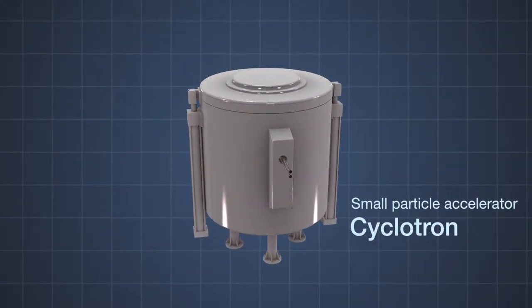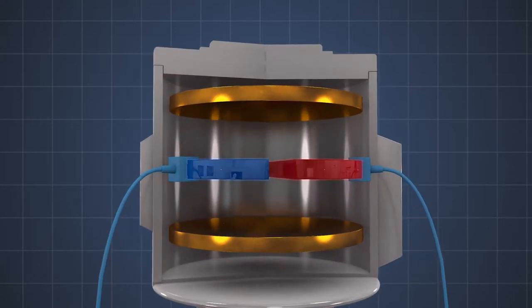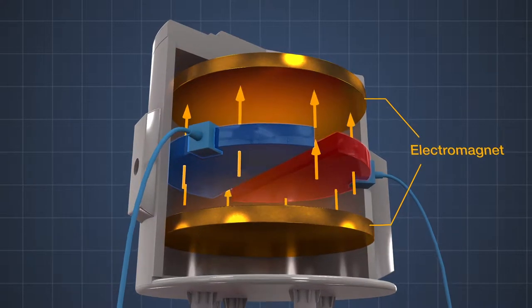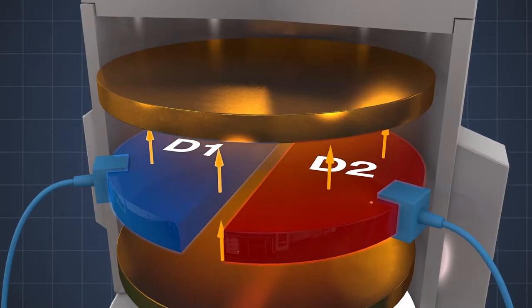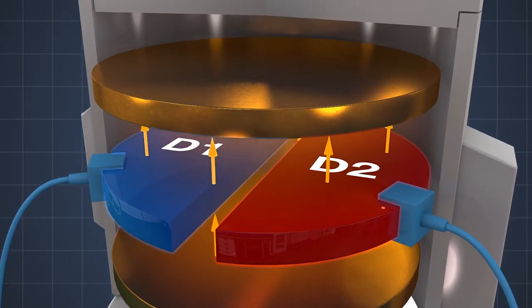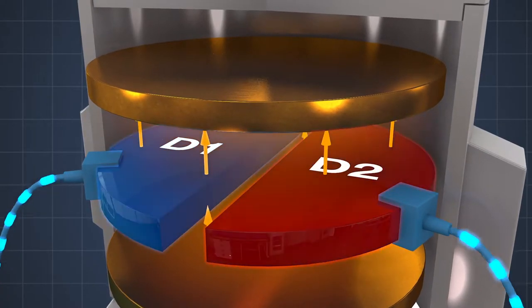Cyclotron is a small particle accelerator. Two cylindrical electromagnets are disposed in the upper and lower parts of the tank in a vacuum state to form a magnetic field. And alternating current is supplied to hollow D-shaped electrodes D1 and D2, placed in between the two electromagnets so that the polarity keeps changing.